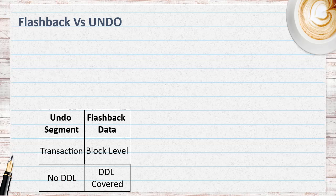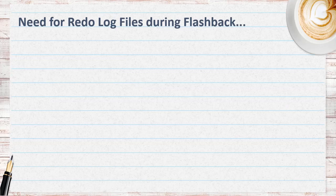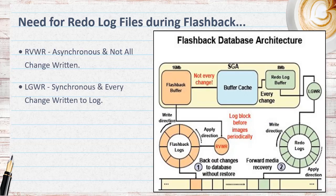So if flashback and undo are different, how does the recovery writer get the pre-image of the block? This comes from a memory component called the flashback buffer, which is part of the SGA and gets allocated when we enable the flashback database. The flash mechanism of recovery writer is similar to the log writer process. The log writer writes redo changes to the redo logs, while recovery writer writes the flashback buffer into the flashback logs.